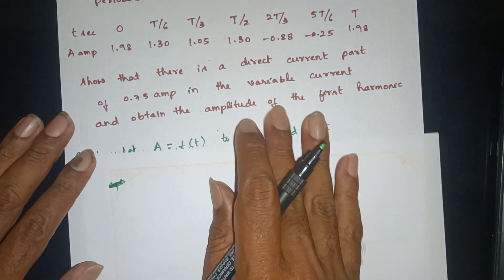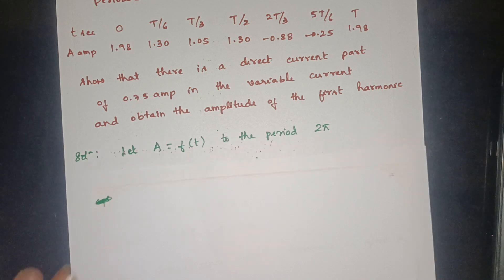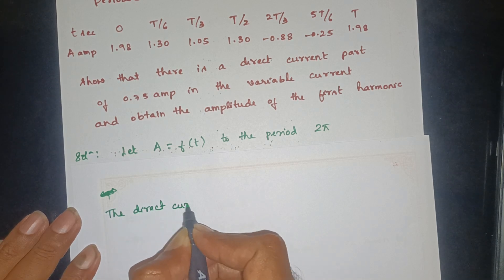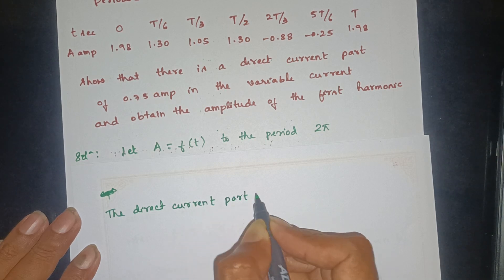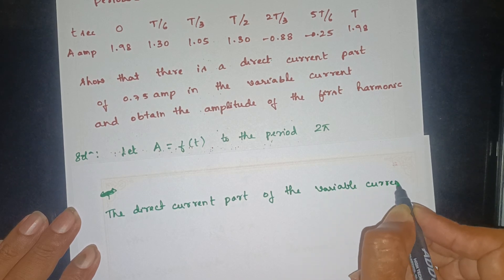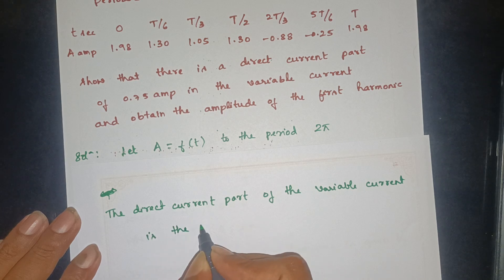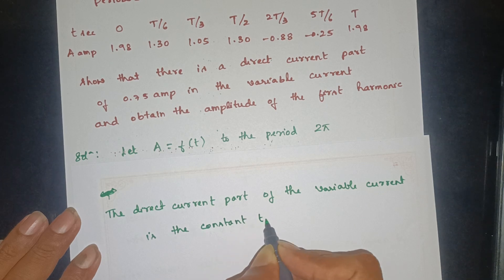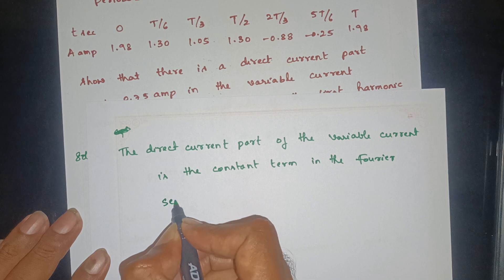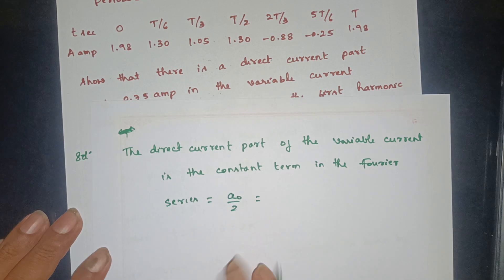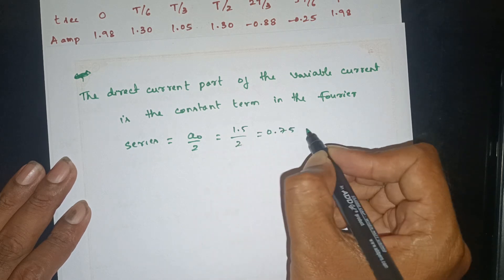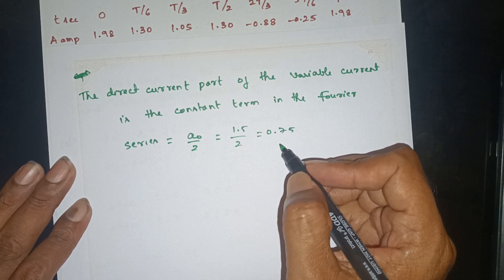There is a direct current part of 0.75A. The direct current is the constant term in the Fourier series, which is A0/2. Since A0 = 1.5, A0/2 = 1.5/2 = 0.75 ampere. This verifies the required result.